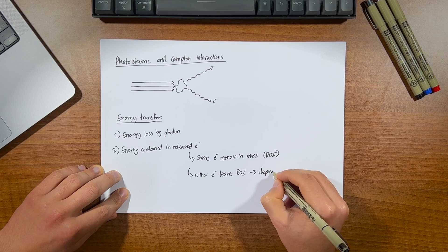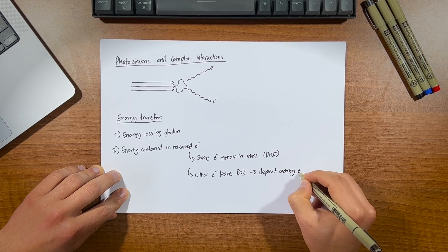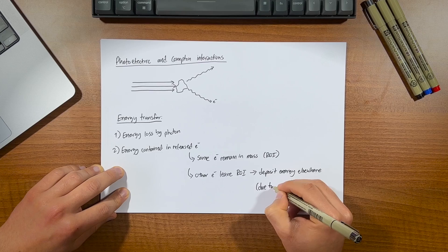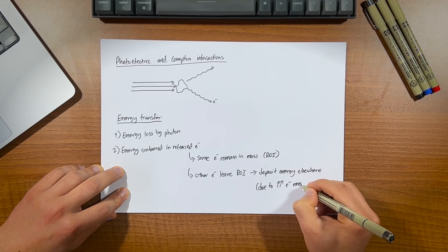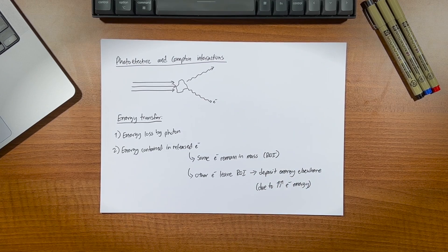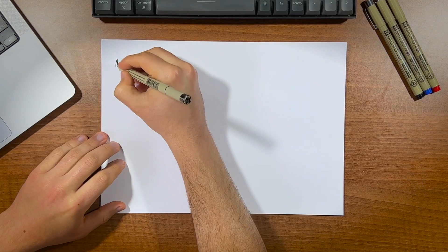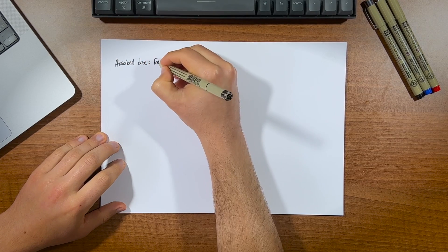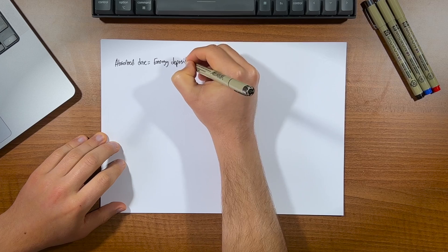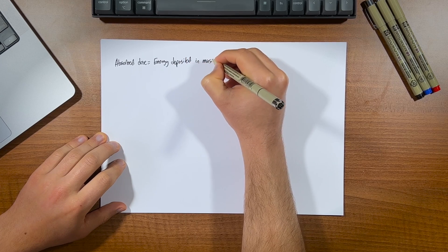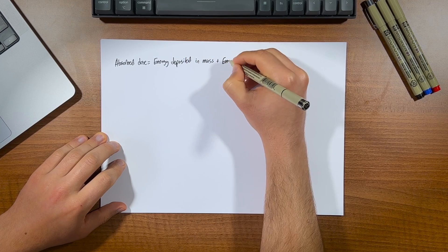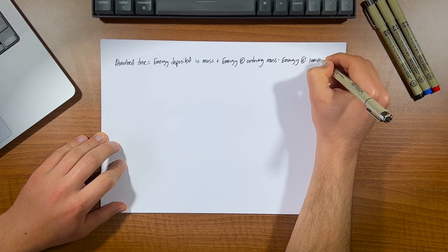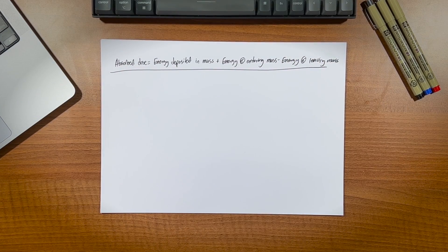These electrons that escape will then deposit their energy at some distance away from the original interaction process. So it still deposits that energy, but it's just not in that localized region it started off in. To summarize, this means that absorbed dose is equal to the energy deposited in a particular mass - that is, the energy given up by the photons in the original interaction, plus the energy of the electrons entering or in the mass, minus the energy of the electrons escaping from that mass.